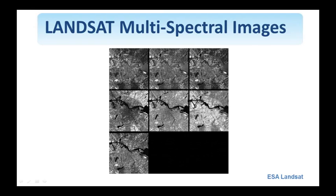Here's an example of a Landsat 7 image of the city of Amsterdam. You see the blue, green, and red channels up top, and the four other channels are infrared. Hyperspectral images are the ones that have many more bands — up to 200 or even 300 bands — but the main characteristic is that the bands are much more closely spaced compared to multispectral images.